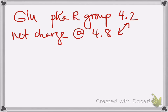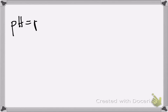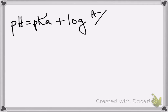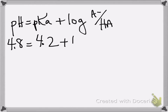Being close together, you'd have to use Henderson-Hasselbalch. So pH equals pKa plus log of A⁻ over HA. The pH that we're working with is 4.8. The pKa of the R group is 4.2. The deprotonated group is COO⁻ and the protonated group is COOH.